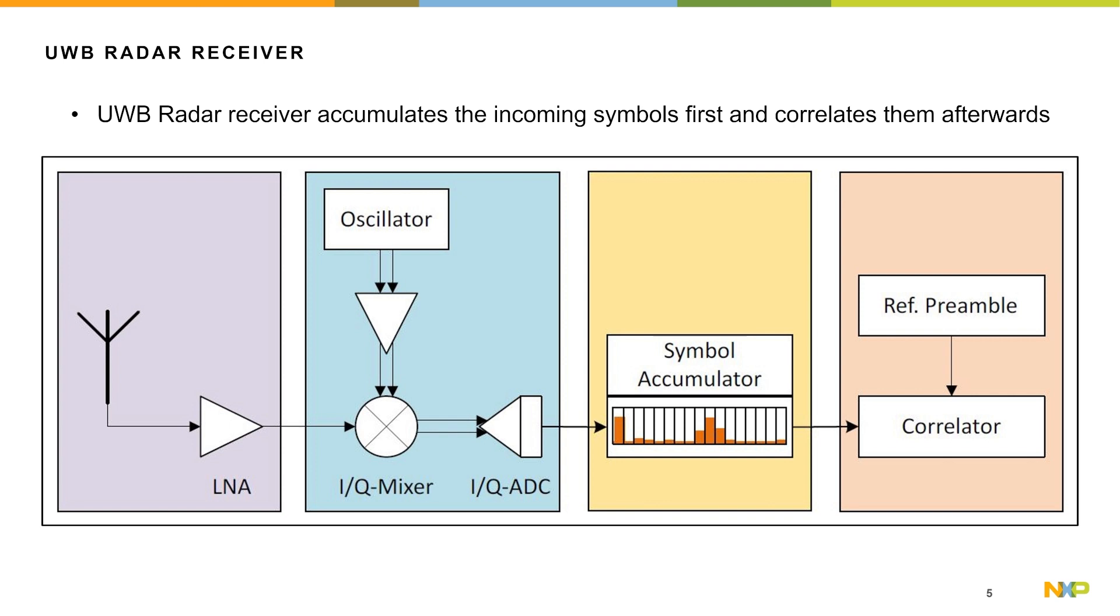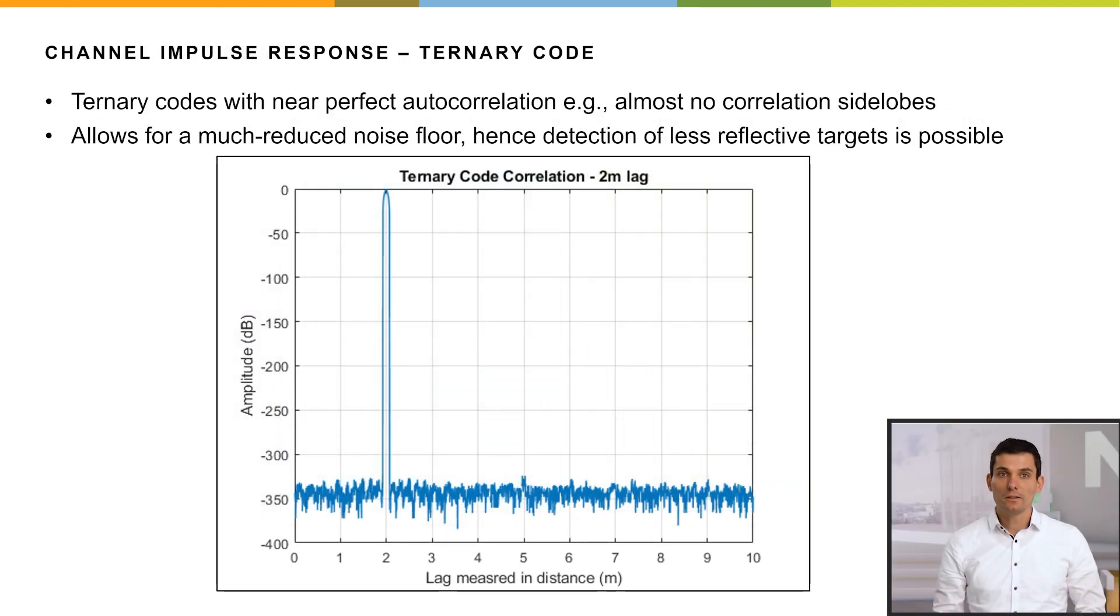This digital baseband signal is fed into the symbol accumulator. And afterwards, the result is correlated with the known preamble. As a result, we get a so-called channel impulse response, or CIR.